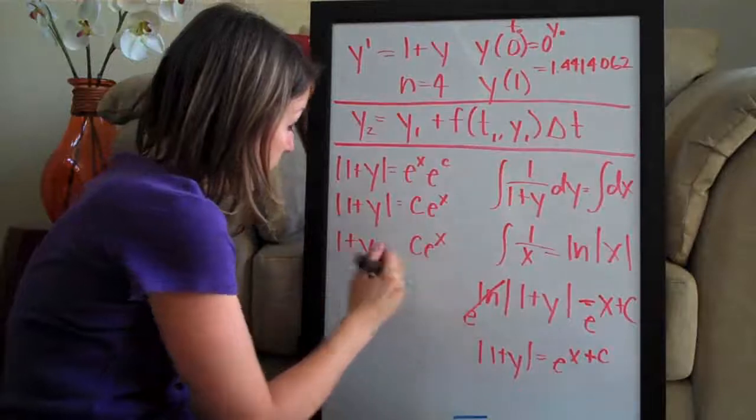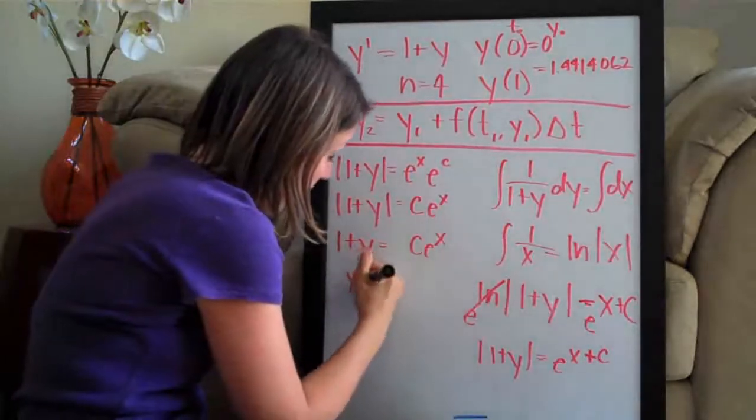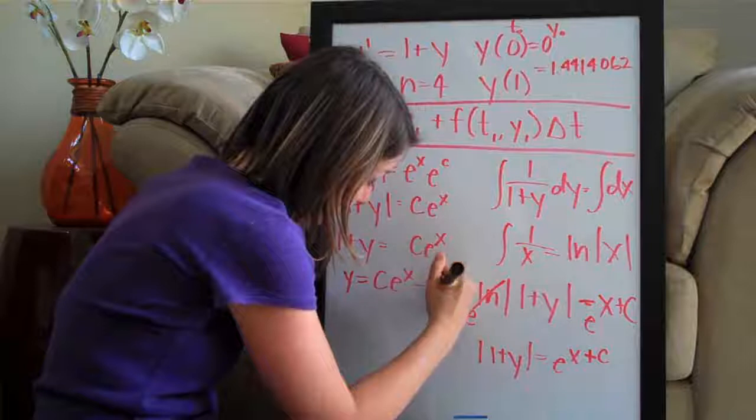Of course we're going to subtract 1 from both sides so that we get y equals c e to the x minus 1.